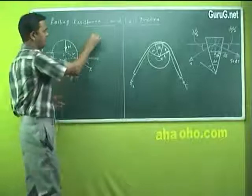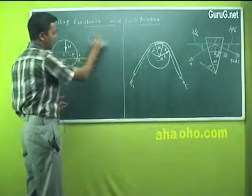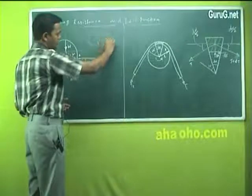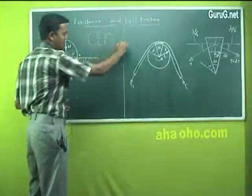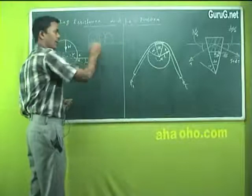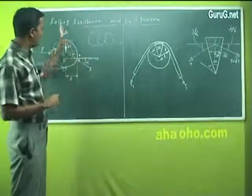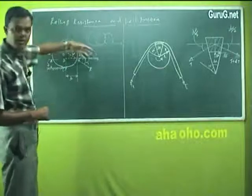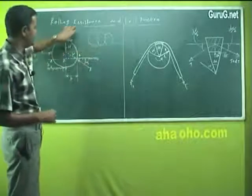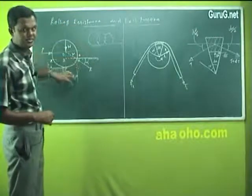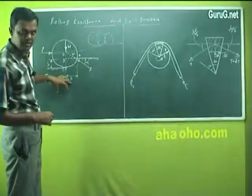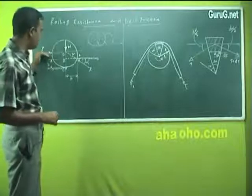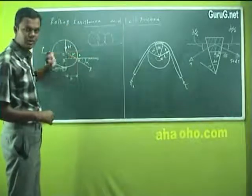Depending on the surface of the body, it has to keep on deforming. Rolling resistance is the resistance offered by the surface for any body to roll. The applied force has some value, say P, and the value of resistance applied against the body rolling is the rolling resistance.